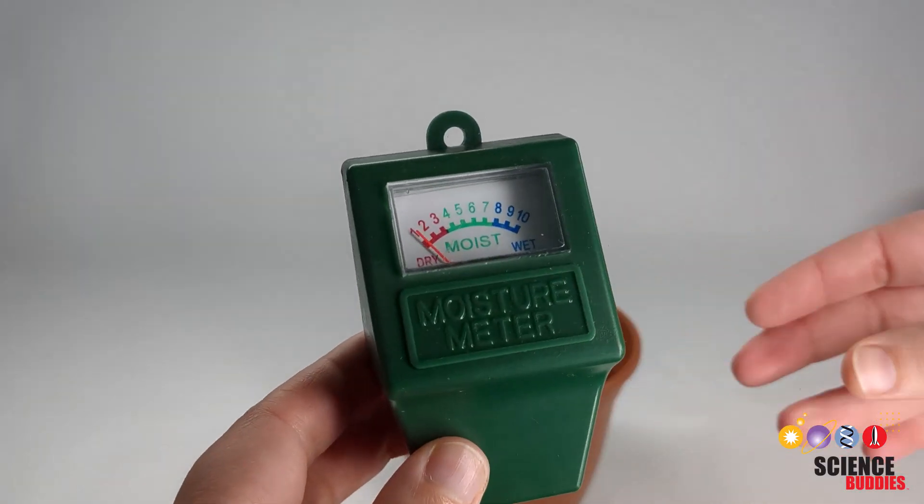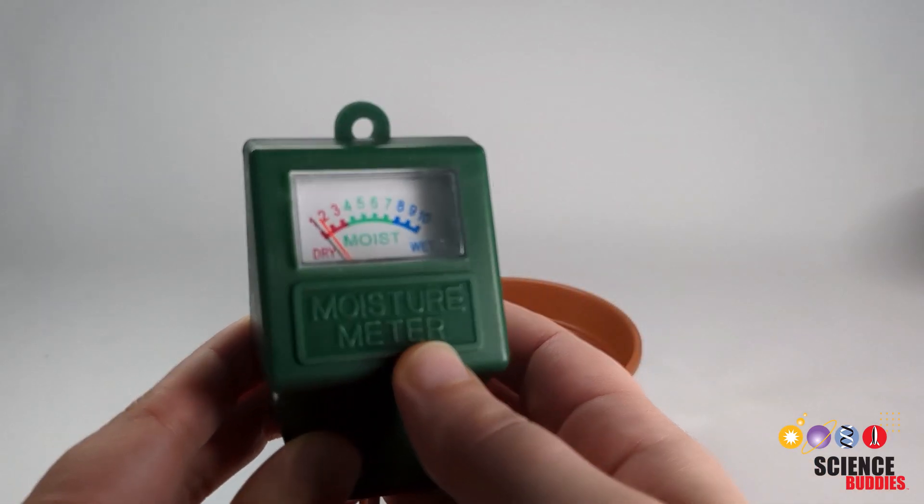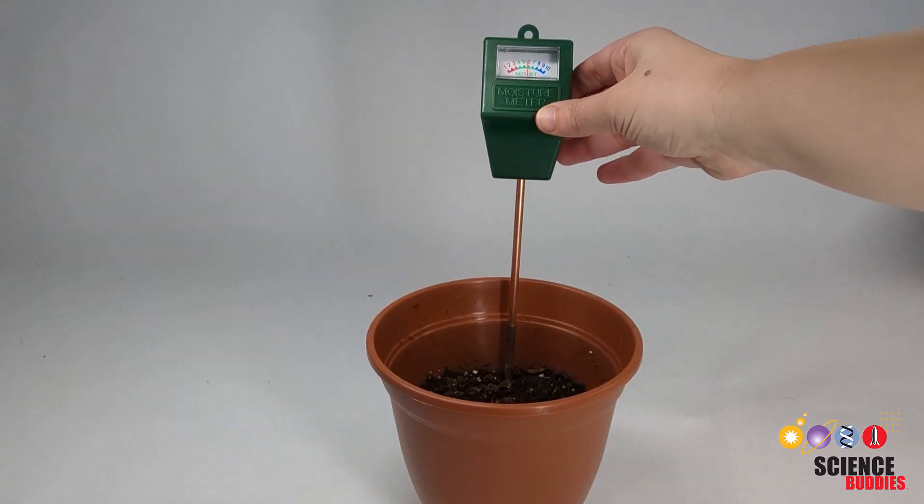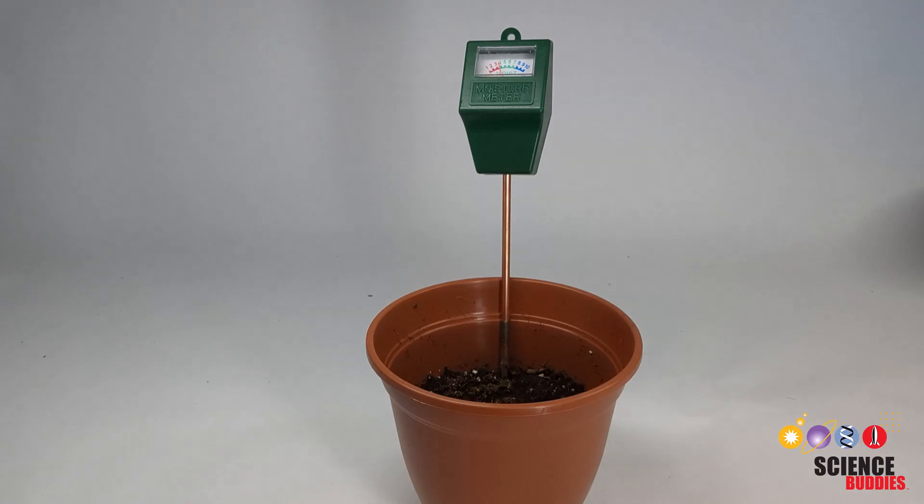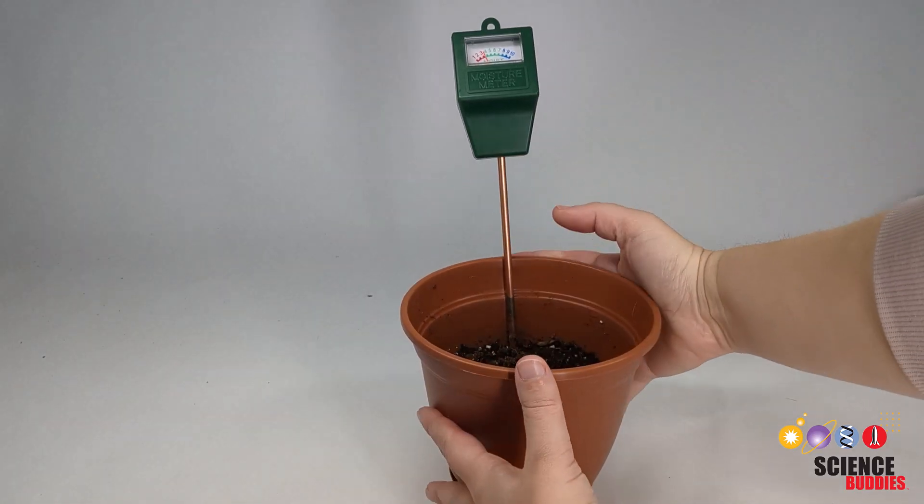To measure the impact that each irrigation system has on soil moisture and plant growth, you can first use a moisture meter or hygrometer. To use a hygrometer, insert the probe into the soil to the same depth for each pot. Wait 30 to 60 seconds and then read the moisture level on the scale.